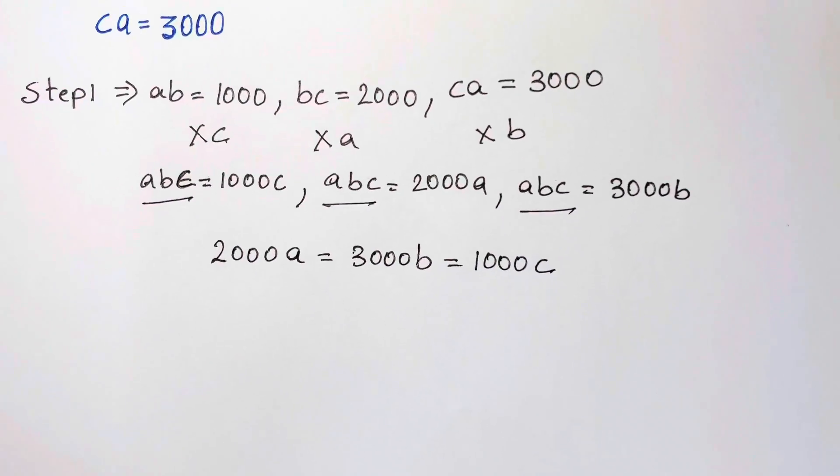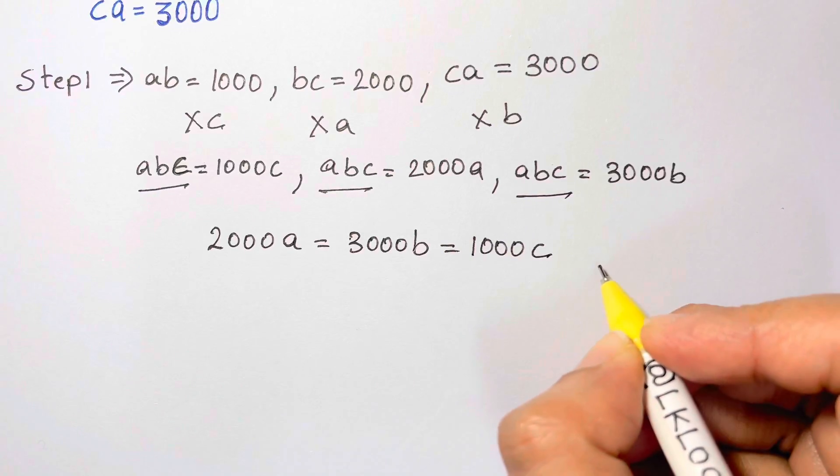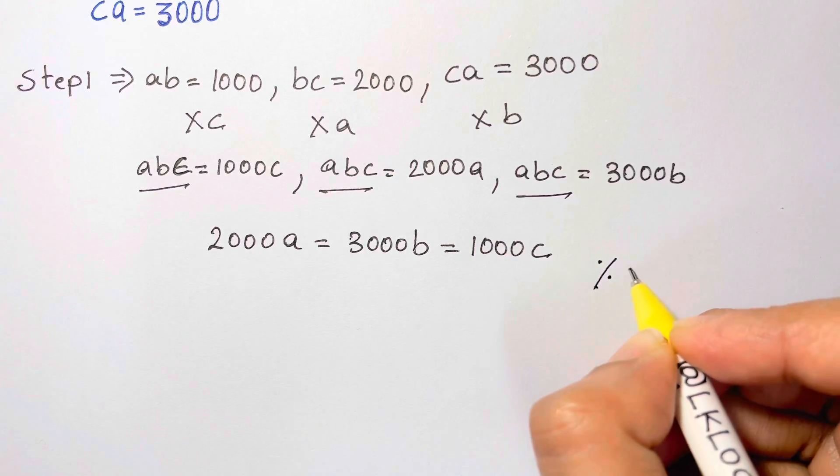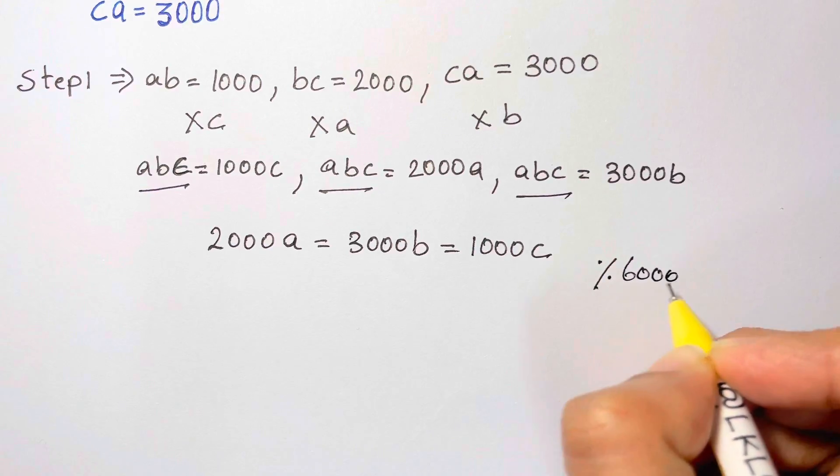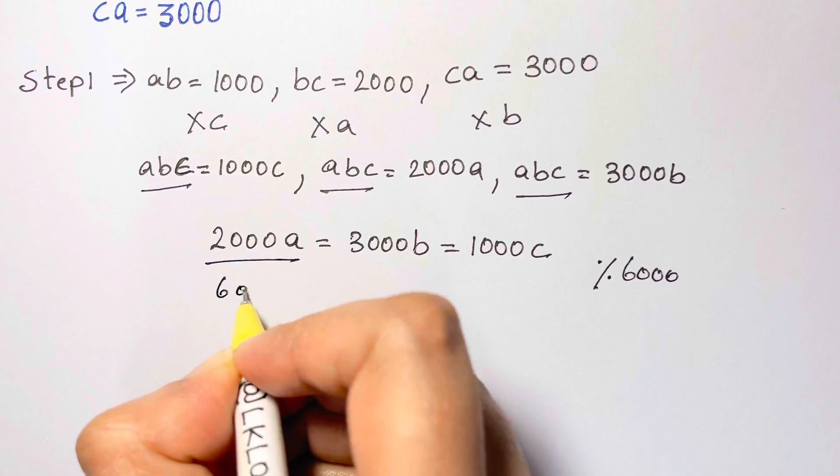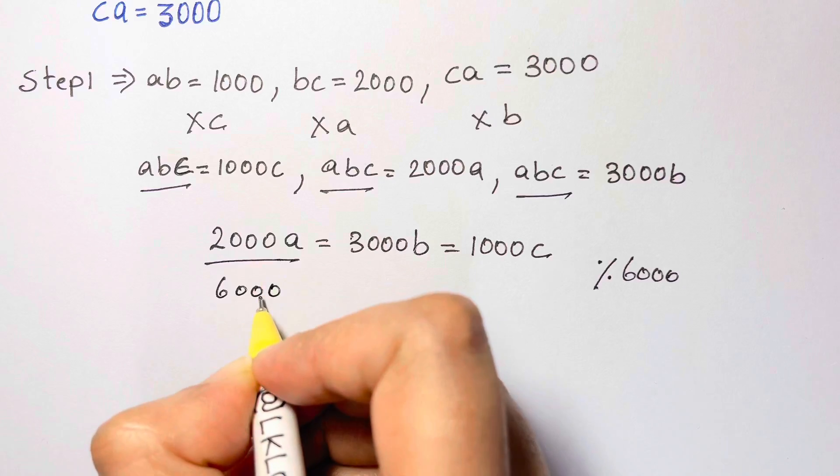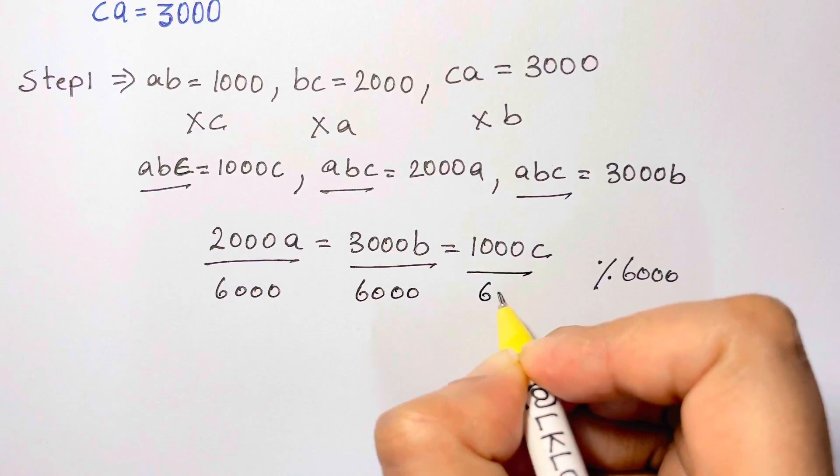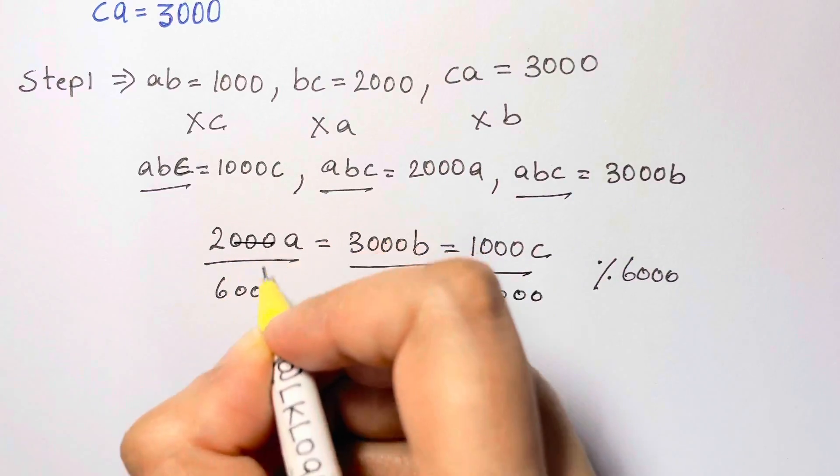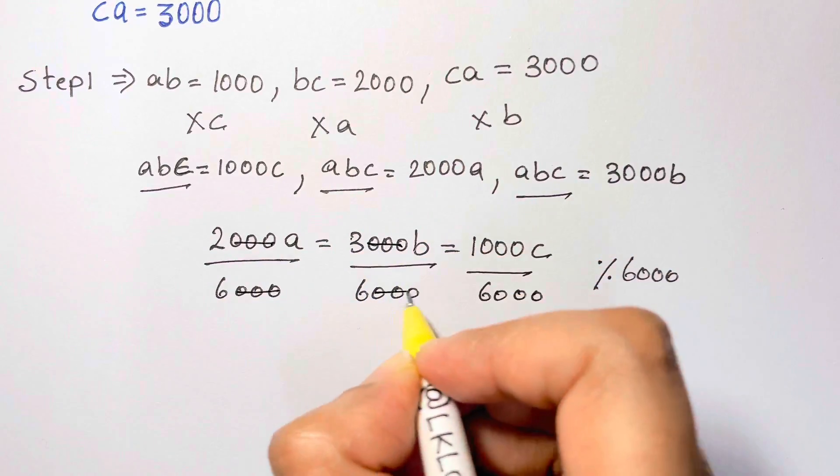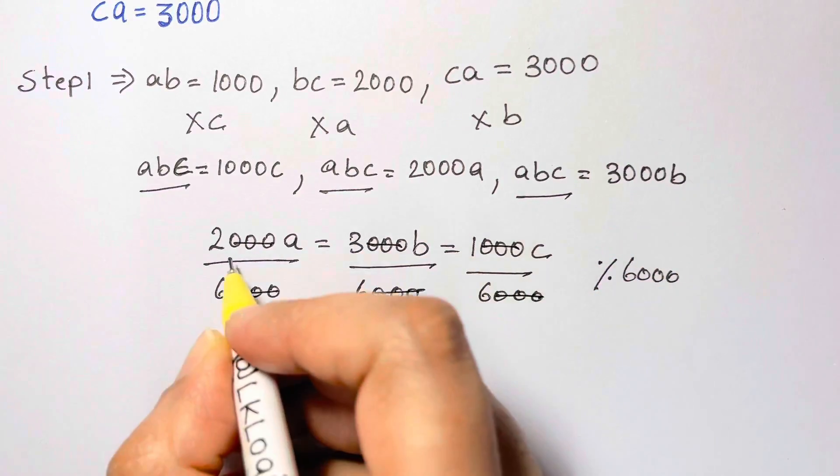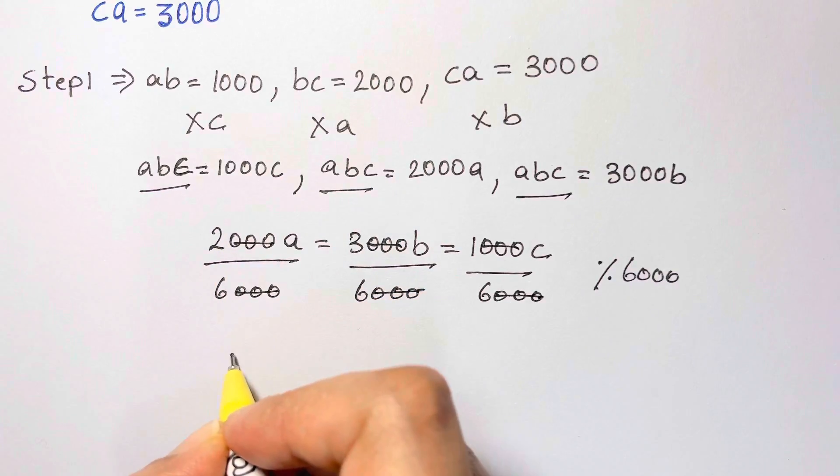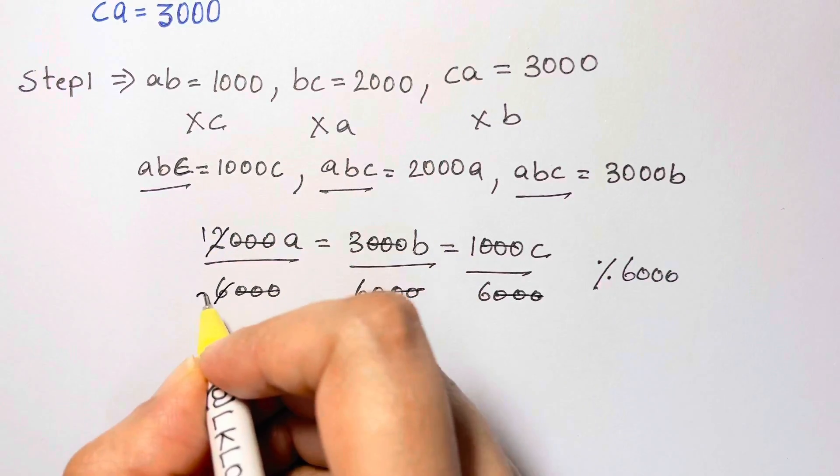Now, what's the next step we can do is, divide both sides by 6000. So when we divide both sides, let's divide numerator and denominator by 6000. So what do we get? Let's cross out the zeros here, here, here. So we're left with 2 over 6, that is 1 over 3.